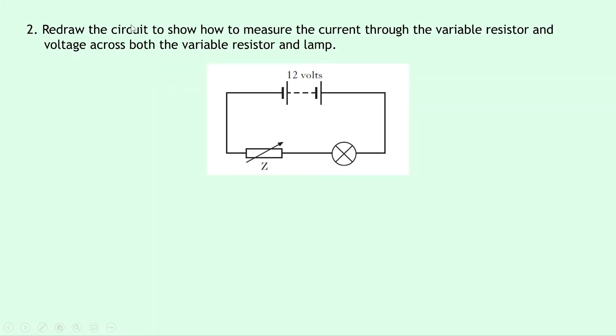Question two says to redraw the circuit to show how to measure the current through the variable resistor and voltage across both the variable resistor and lamp. So we've got a 12 volt battery, a variable resistor, and a lamp there.